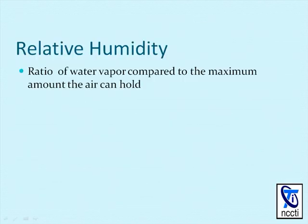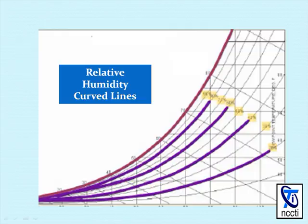Relative humidity is the ratio of water vapor compared to the maximum amount the air can hold. On the psychometric chart, the relative humidity lines are represented by the curved lines you see there in purple.